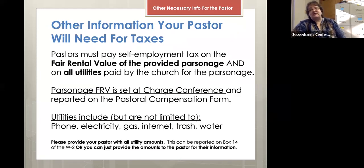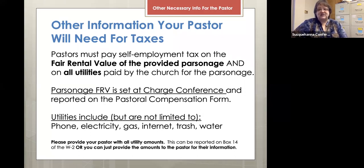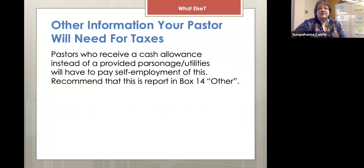There is some other information your pastor needs from you to do their taxes. The fair rental value — which they should be able to get off the charge conference form — is one thing. They also need to know the utilities that have been paid for the parsonage, including but not limited to phone, electricity, gas, internet, trash, and water. Your pastor has to pay self-employment taxes on the fair rental value and the utilities that have been paid. You can report these numbers in box 14, or you can just provide them directly to your pastor. If you pay a cash allowance, it's really good to put that amount in box 14 Other so that state and local will see the differences in the numbers.